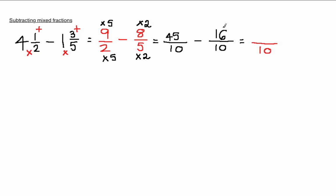45 take away 16. You need 4 more to get to 20, and then from 20 to 45 is 25. So altogether, that's 29 over 10.